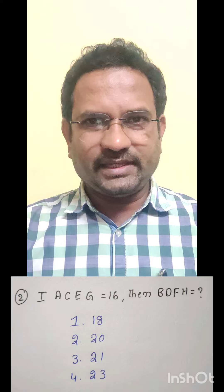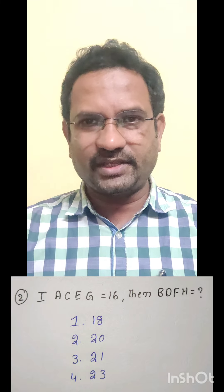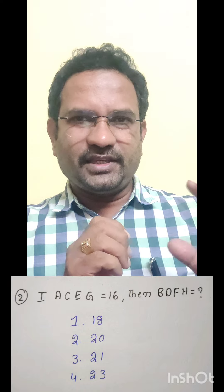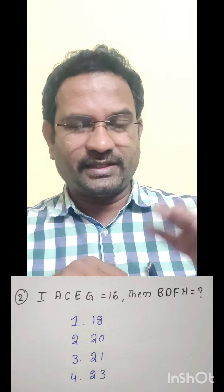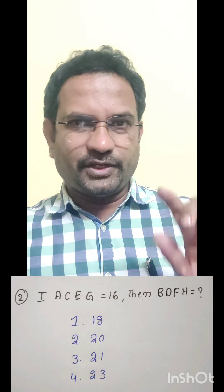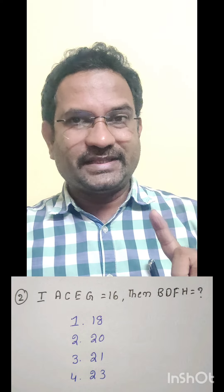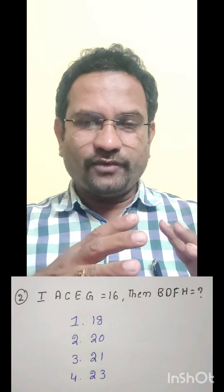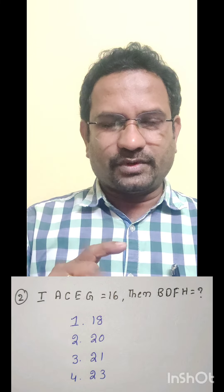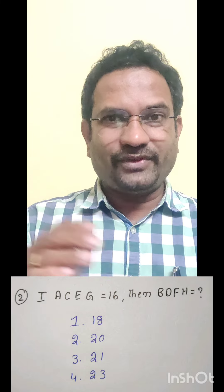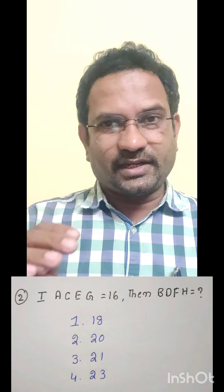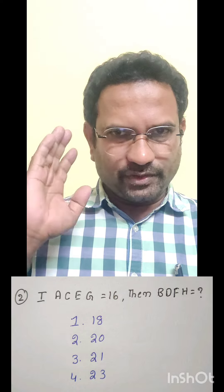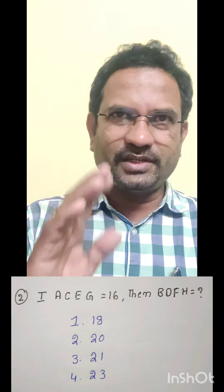Next question: If A, C, E, G = 16, then B, D, F, H = ? Take the alphabets in numerical order — A is 1, C is 3, E is 5, and G is 7. When you add all of them you get 16. Similarly, B is 2, D is 4, F is 6, and H is 8. When you add all of them you get 20. These are all very simple things — the only thing is you need to get the relationship. So the answer is 20.